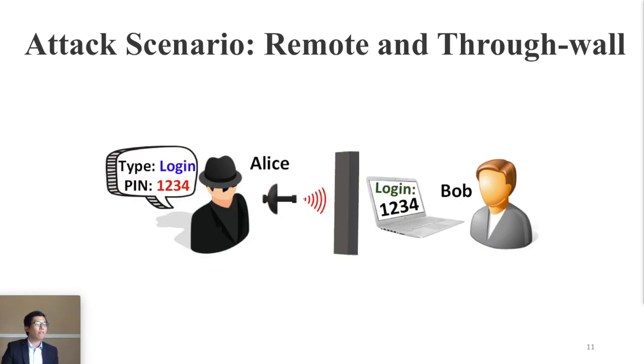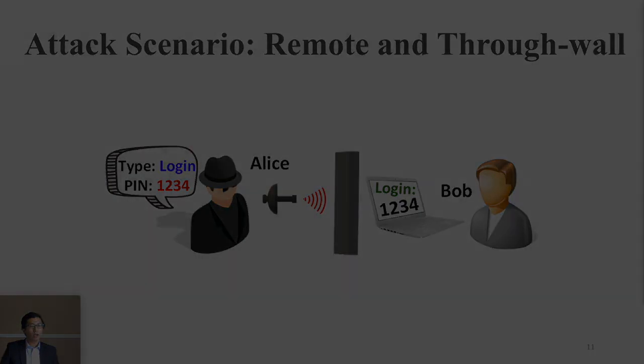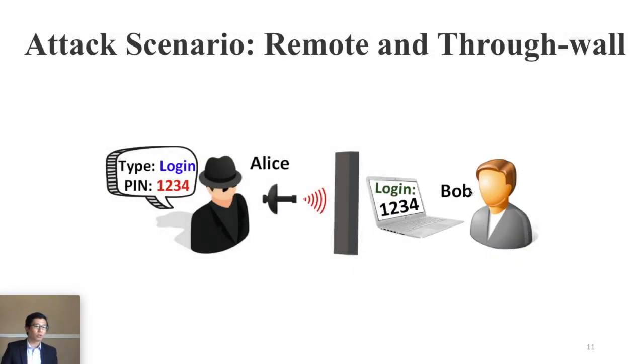Let's say we have a user named Bob typing his password to his computer in a room, and this room is isolated by a wall. At the same time, the attacker Alice is trying to steal the password of Bob remotely and through wall. However, to achieve this goal, the first question is how we enable such new side channel.